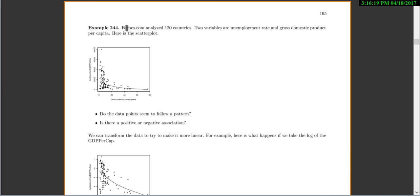Now, in this next one, Forbes.com analyzed 120 countries. Two variables are unemployment rate and gross domestic product. And they're trying to figure out if they can find a relationship. So when I look at these points, there does kind of seem to be a relationship. But it's curved. It's not a line. Okay, so definitely not a line. Now as far as is there a positive or negative association, even though it's not a line, we can still see as we come to the right, we're going down. So we can still say it's a negative association.